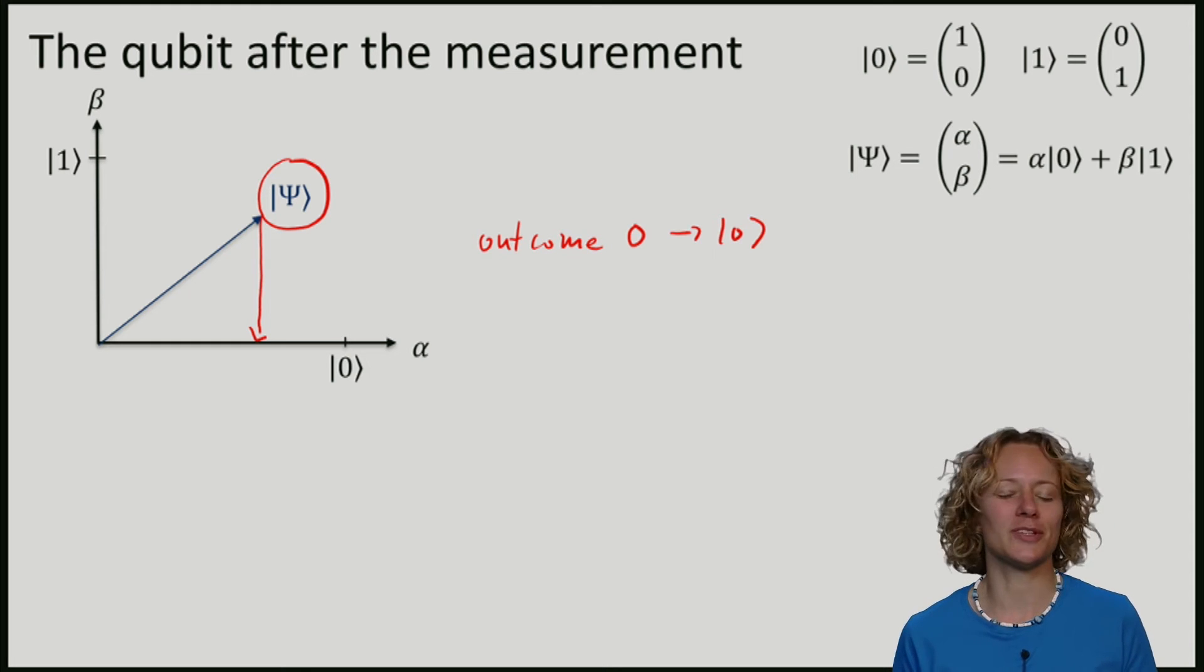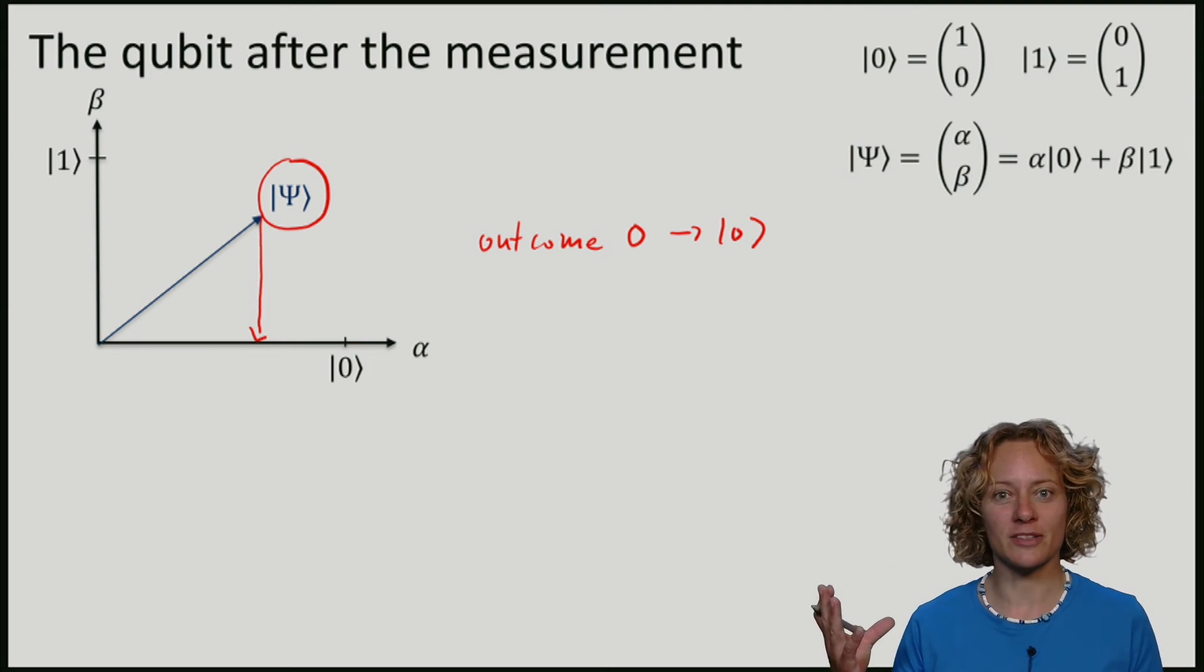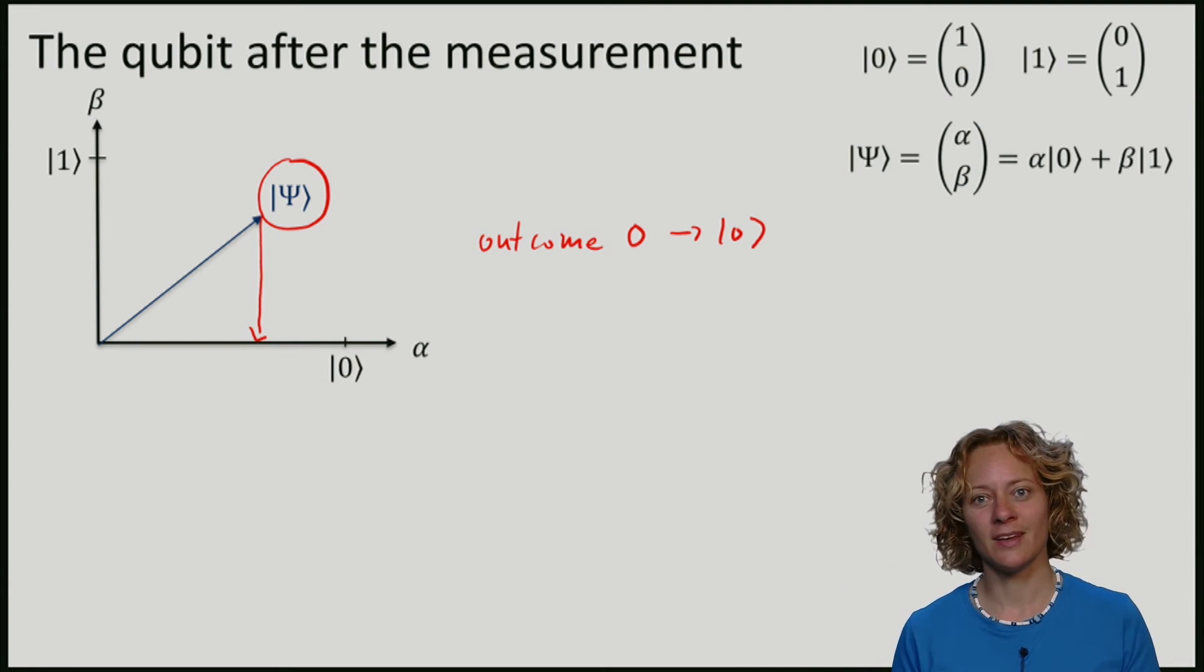So the state has collapsed to 0. Similarly, if we saw the outcome 1, then the final state would be 1. So we have collapsed the superposition and we have lost the information about alpha and beta. We are just in one of the two classical basis states.